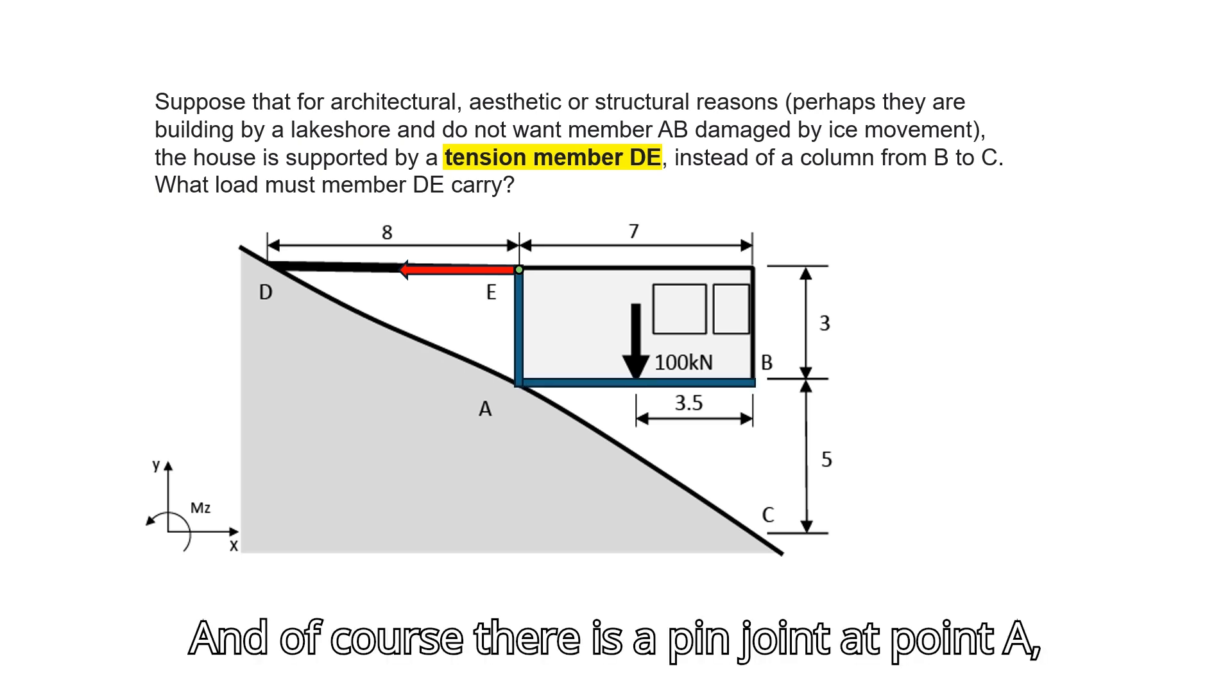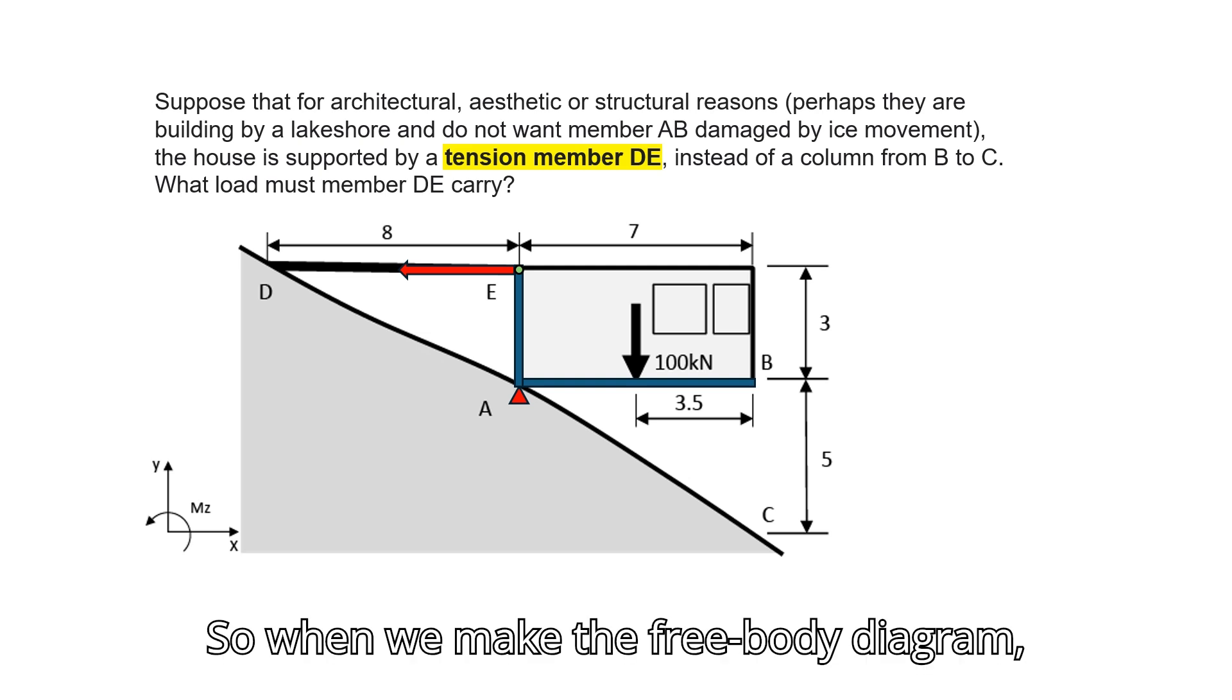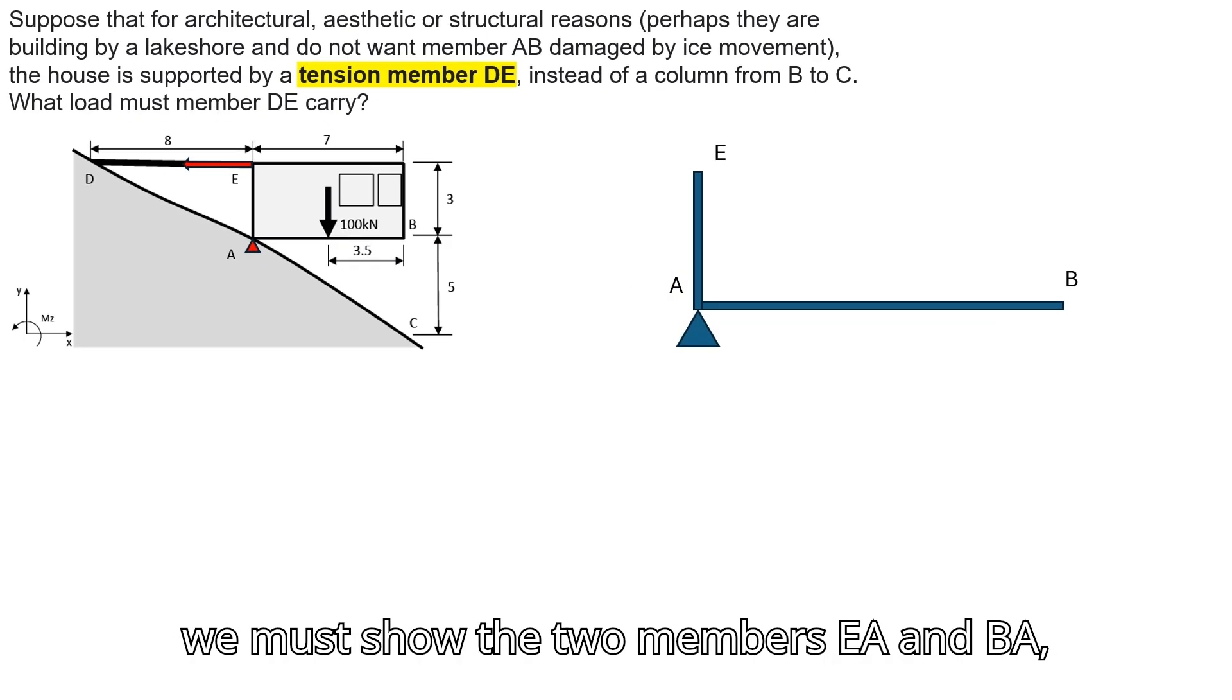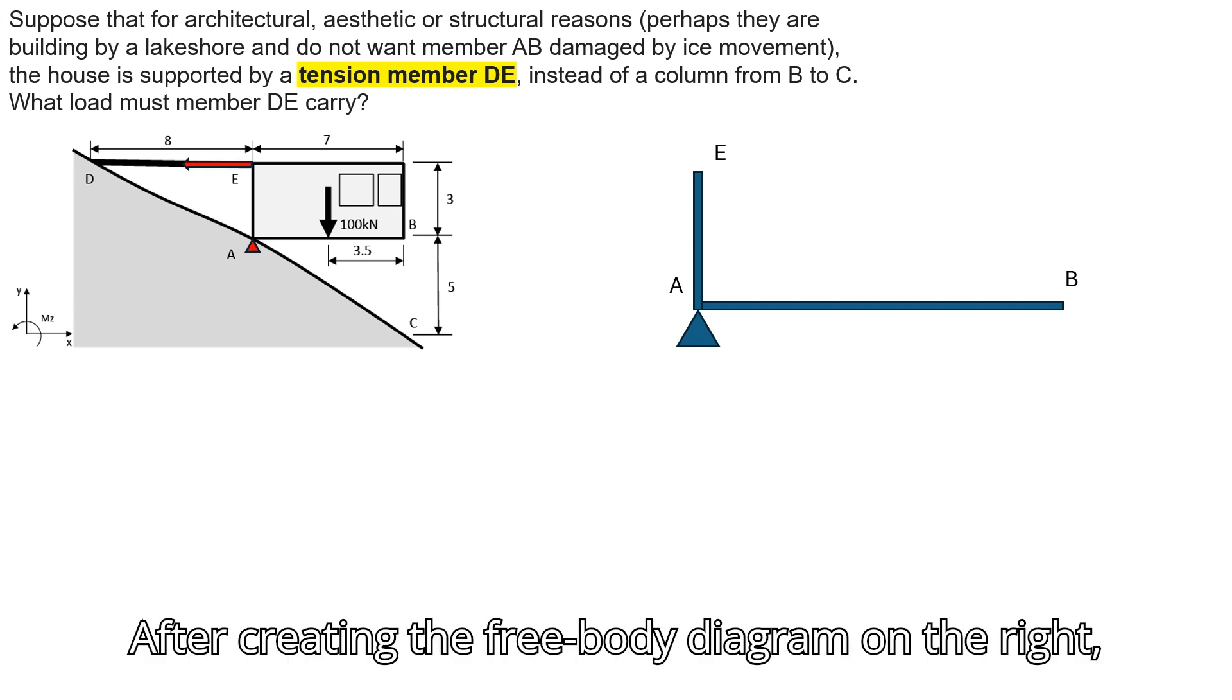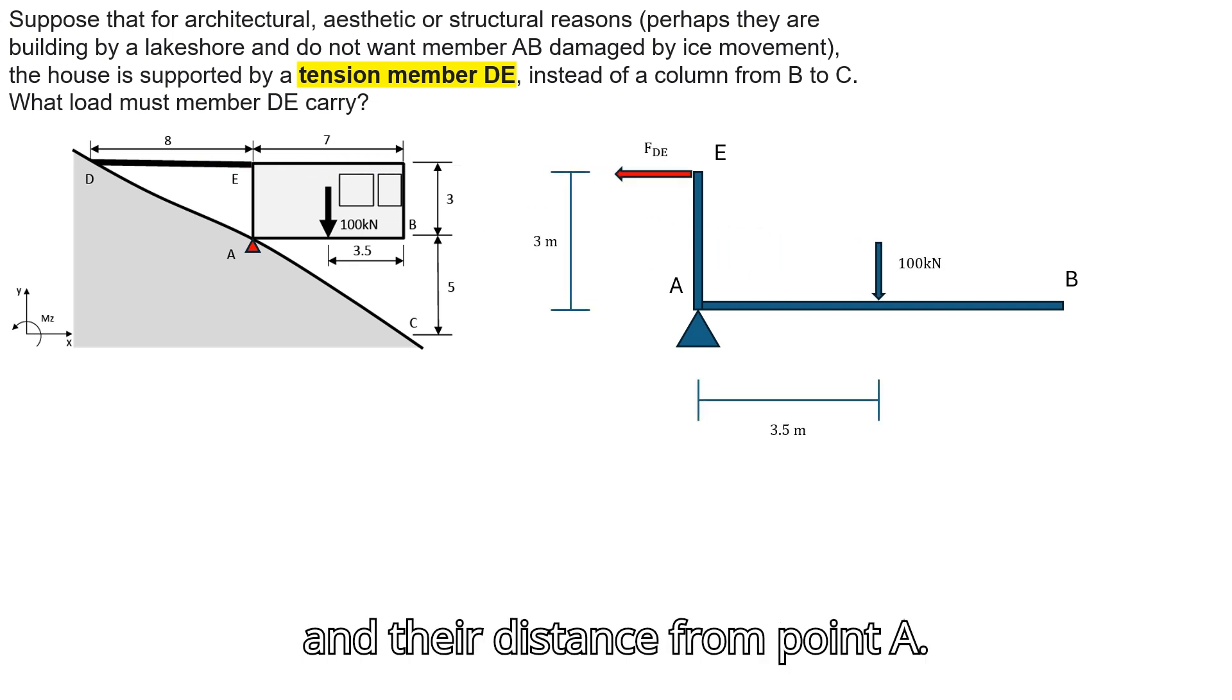And of course, there is a pin joint at point A, but member EA and AB are connected rigidly to one another. So when we make the free body diagram, we must show the two members EA and BA, as well as the pin at A. After creating the free body diagram on the right, apply the forces onto the free body diagram and their distance from point A.